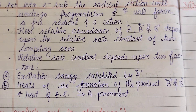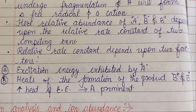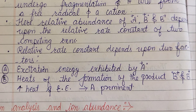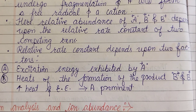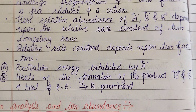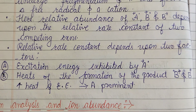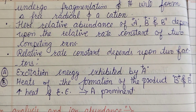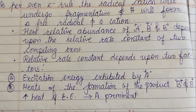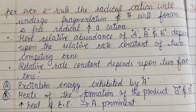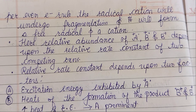The relative abundance of the molecular ion and the cation will depend on the relative rate constants. The rate constant depends on two factors: the excitation energy exhibited by the ion, and the heat of formation. So following the even electron rule, the relative abundance of fragments depends on these rate constants.